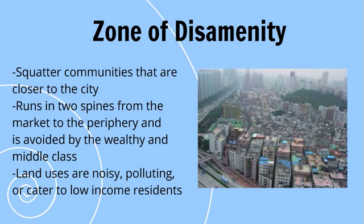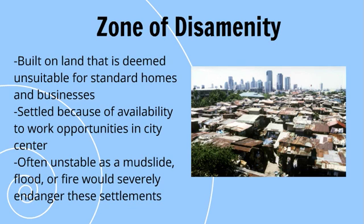The zone of disamenity consists of squatter communities closer to the city, running in two spines from the market to the periphery, and is avoided by the wealthy and middle class. Land uses are noisy, polluting, and catered to low-income residents. It is built on land deemed unsuitable for standard homes and businesses, settled because of availability to work opportunities in the city center. It is often unstable, as mudslides, floods, or fires would severely endanger these settlements.